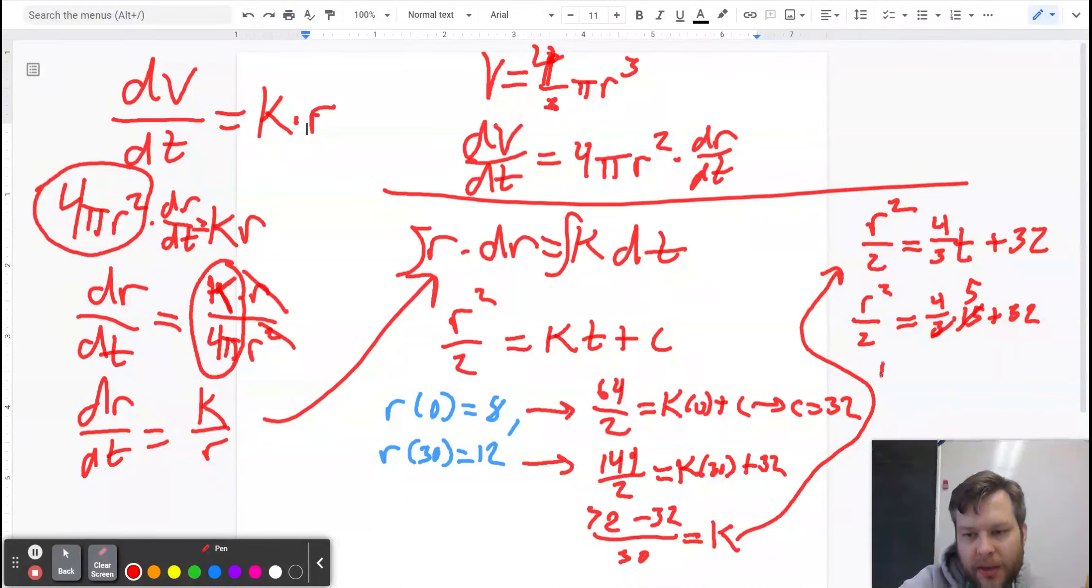4 times 5 is 20. Plus 32 is 52. Times 2 is 104. So r is the square root of 104. So that's going to be pretty close to 10. And that's going to be the centimeter radius after 15 minutes in the oven. There we go. Please ask questions. Let me know how I can help.